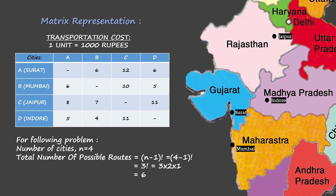Similarly, from Surat to city C, i.e. Jaipur, is 12,000 rupees, and from Surat to city D, i.e. Indore, is 6,000 rupees. And the same goes for every other city. You must have understood why the transportation cost from a city to itself is not taken, as we are concerned about transportation from one city to another and not within the same city itself.